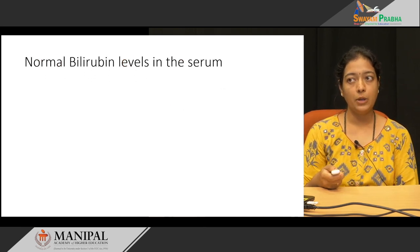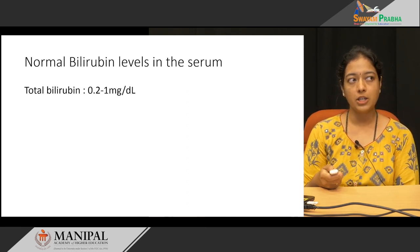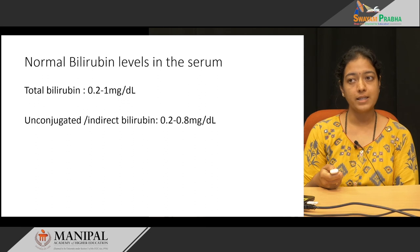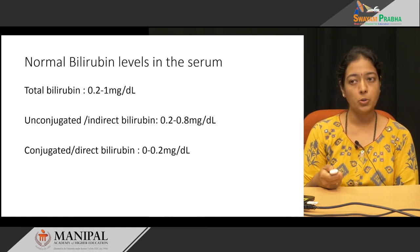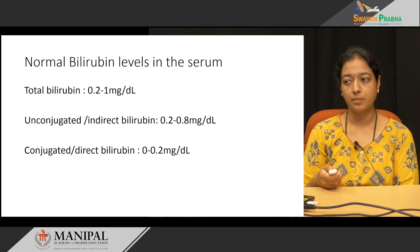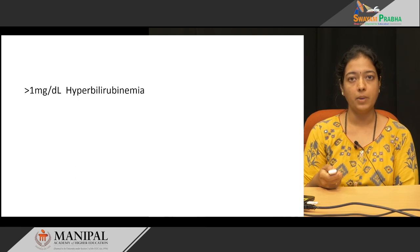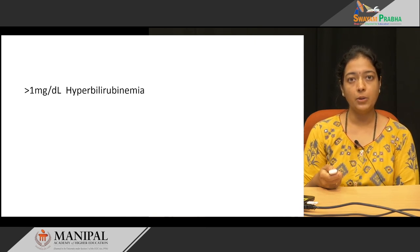The normal level of bilirubin in serum: total bilirubin concentration is 0.2 to 1 mg/dL. Unconjugated (indirect) bilirubin is 0.2 to 0.8 mg/dL, and conjugated (direct) bilirubin is 0 to 0.2 mg/dL. When total bilirubin concentration increases beyond 1 mg/dL, the condition is called hyperbilirubinemia.